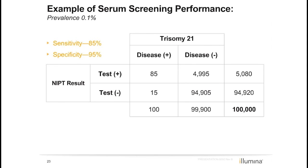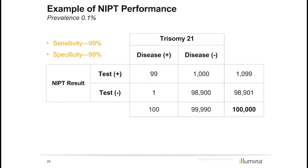The prevalence of Down syndrome in this calculation is 0.1%, or 1 in 1000. The positive predictive value is calculated as the total number of true positives over the total number of patients with a positive result. For this patient, her positive result means the likelihood that the pregnancy is affected is 1.7%.